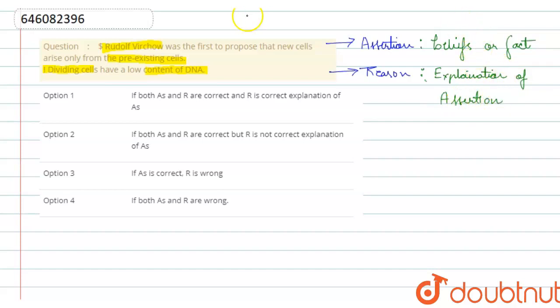As we all know, it is true that Rudolf Witscher was the first to propose new cells arise only from pre-existing cells. So, this statement is true.